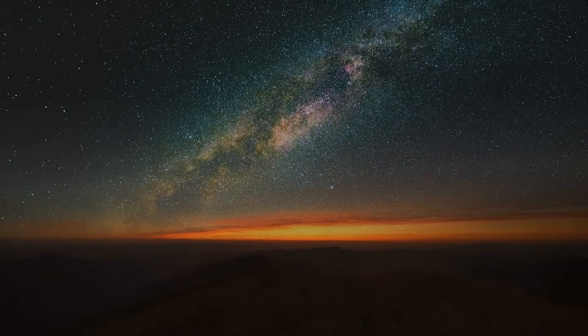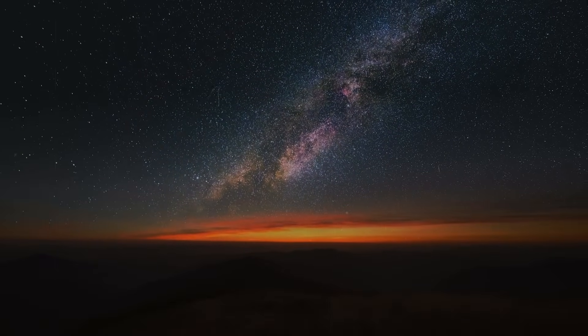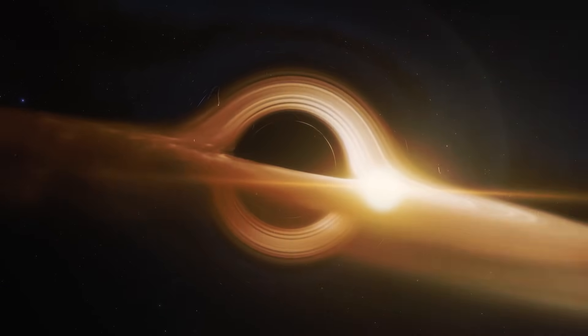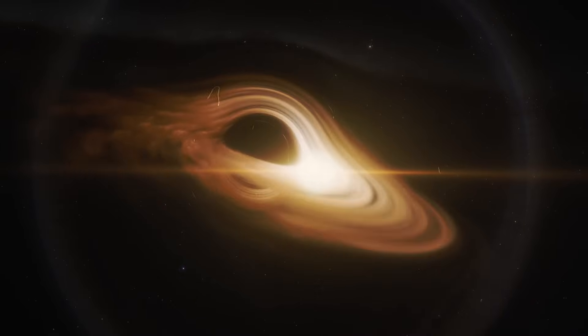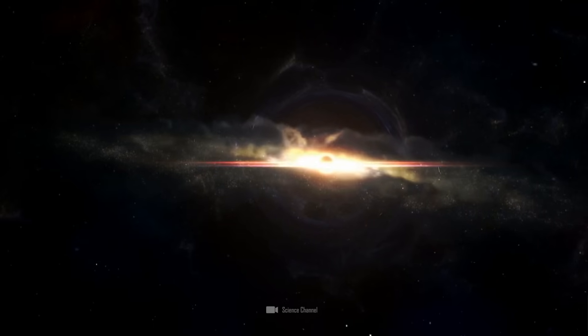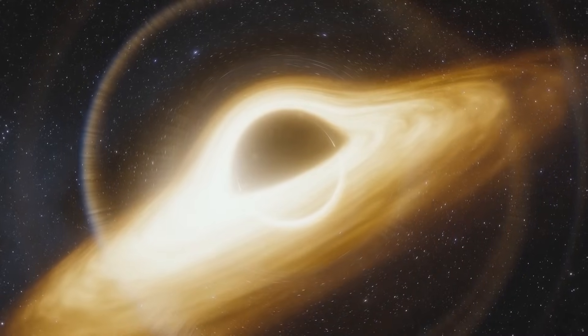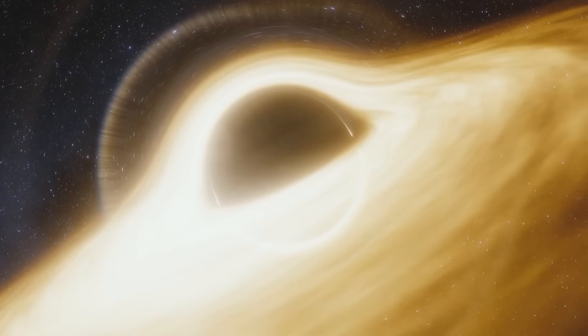But what awaits us here? Well, nothing less than one of the most surreal features in the entire universe, Sagittarius A-star, a supermassive black hole. With an event horizon diameter of around 25 million kilometers, this gravitational monster weighs in at around 4.3 million solar masses. And in 2022, it was even captured on camera for the first time by the Event Horizon Telescope.